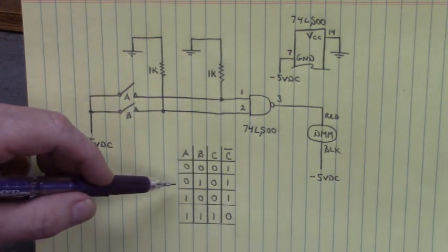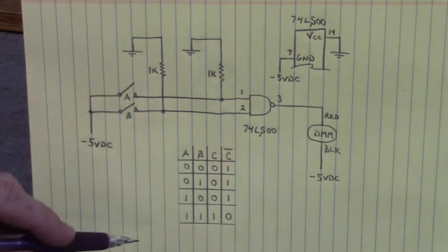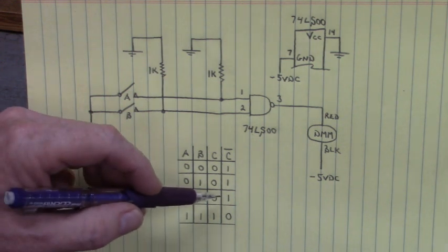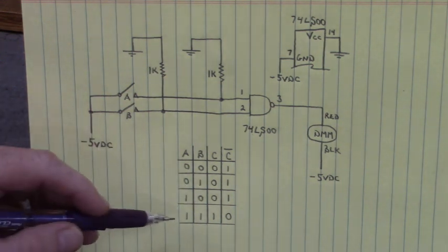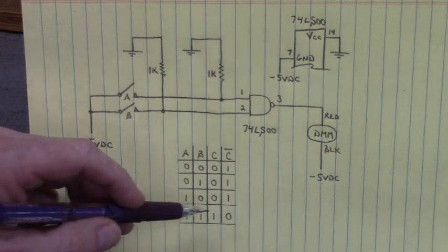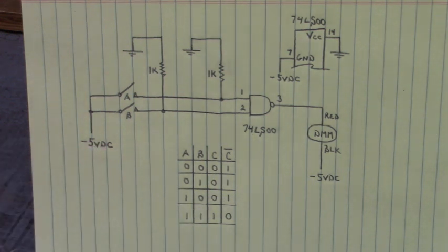Then we are going to go zero one. Our output is still going to be high. One zero on the inputs and the output is going to be high. But when both inputs are high, one one, the output will be low. So let's go perform the experiment and see what we get.